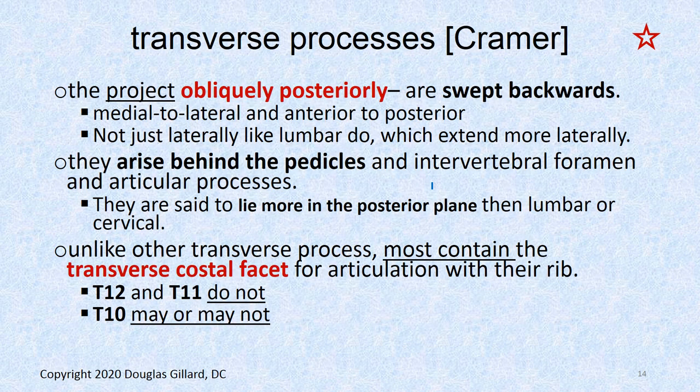Transverse processes are kind of swept back like a jet from an overhead view. They project obliquely posteriorly — in other words, they sweep back medial to lateral, anterior to posterior. They don't stick out just laterally like the lumbar ones do. Unlike lumbar transverse processes, most thoracic transverse processes contain transverse costal facets — we don't have those on any other vertebrae.